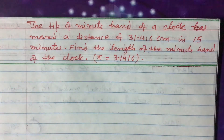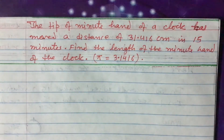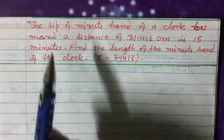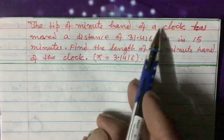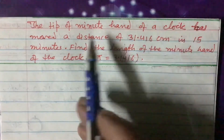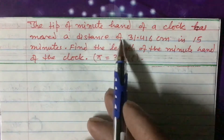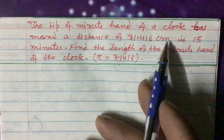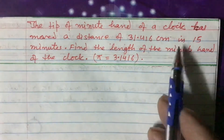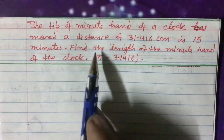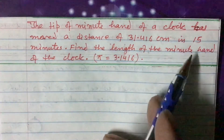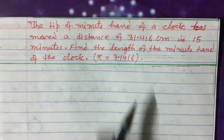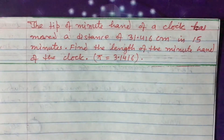Dear students, today I'm going to teach you one question related to measurement and angle. The question is: the tip of the minute hand of a clock has moved a distance of 31.416 centimeters in 15 minutes. Find the length of the minute hand of the clock.